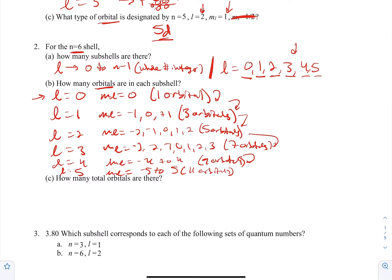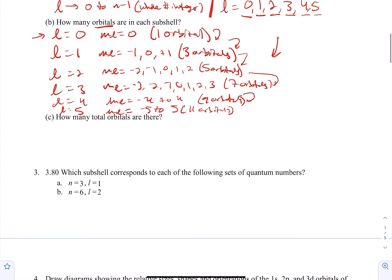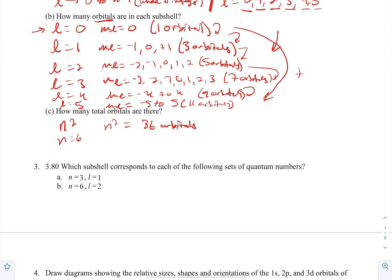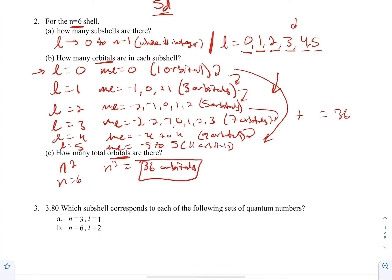They're asking how many total orbitals there are. You could add all those up, but the shortcut is that the total equals N squared. Since N=6, that's 36 orbitals. If you add 1+3+5+7+9+11 you get 36 — it equals N squared every time. So just use N squared to find total orbitals in a shell.